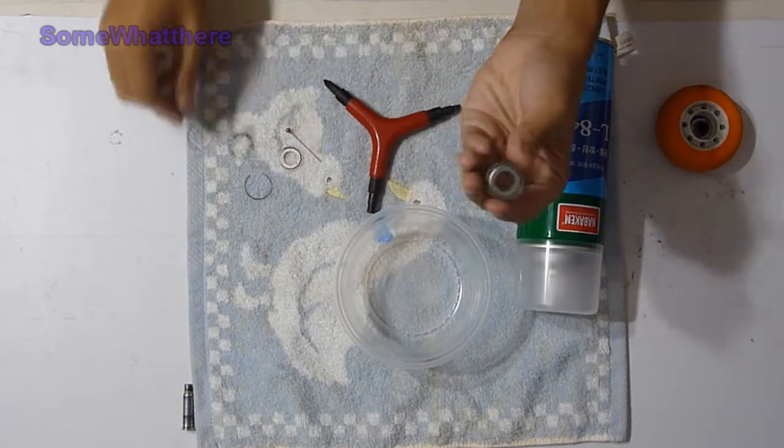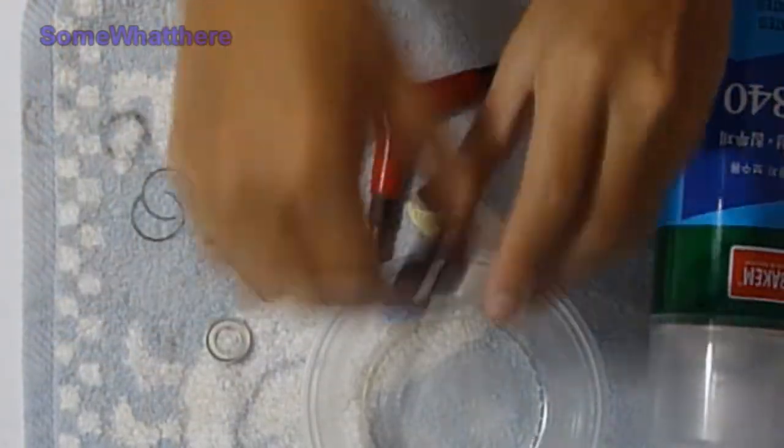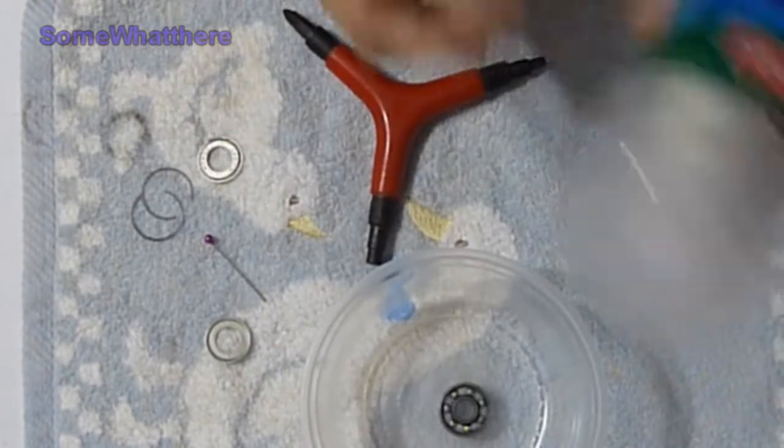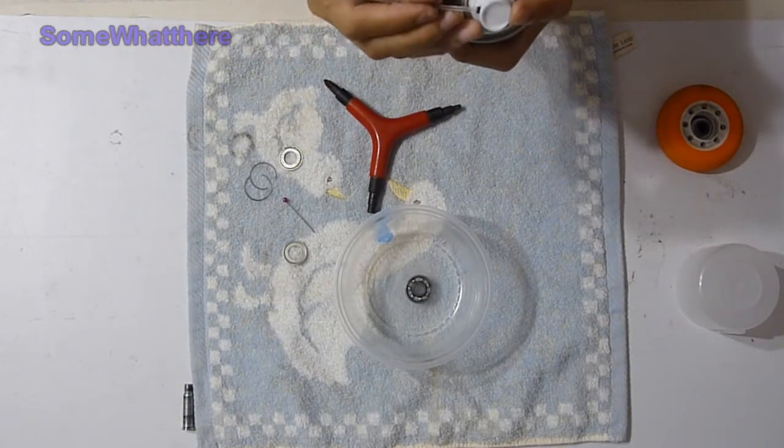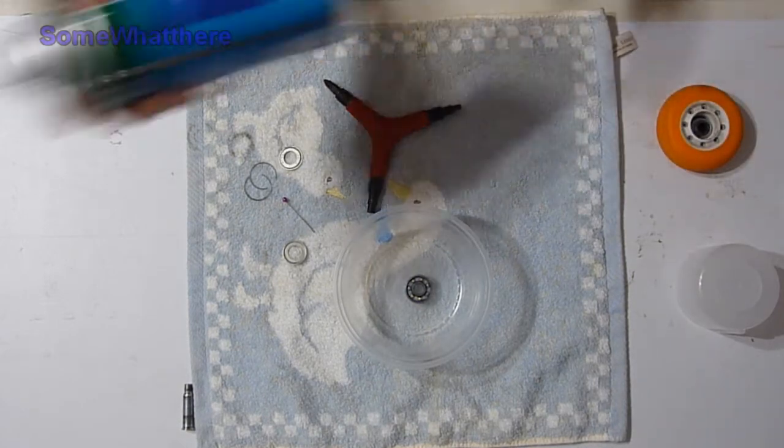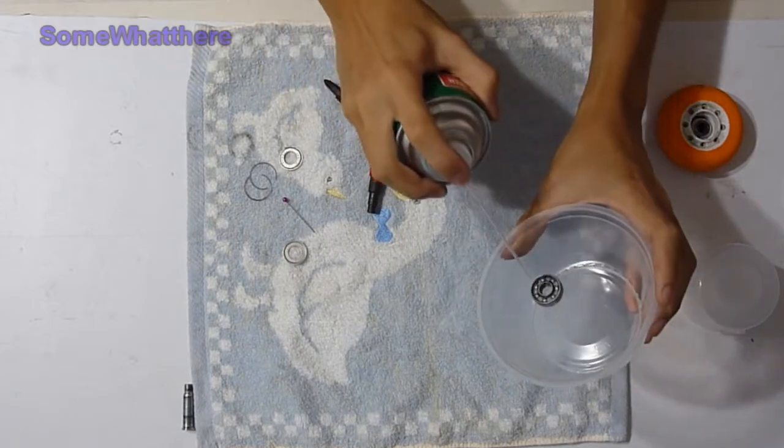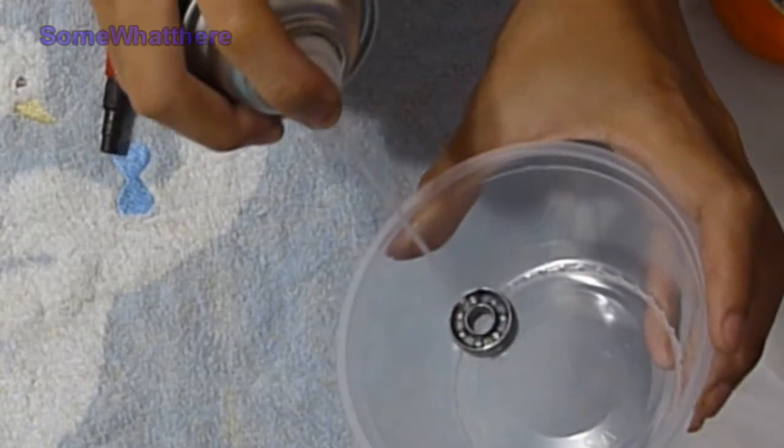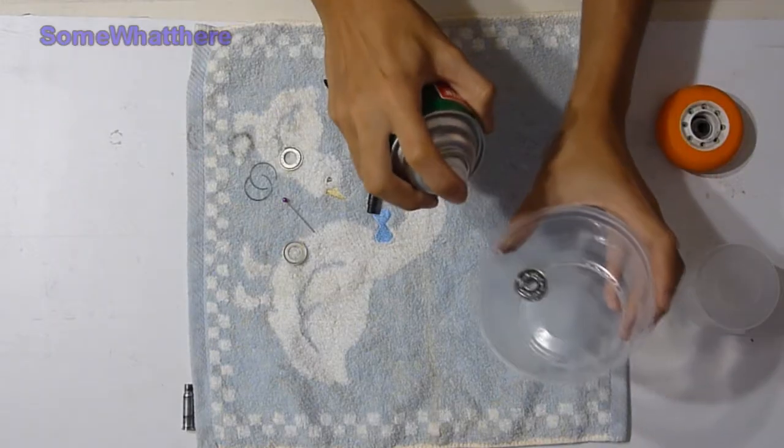You can remove both sides and put it in. Next, use the solution. Give it a shake. Give it some distance and spray in a circular motion.